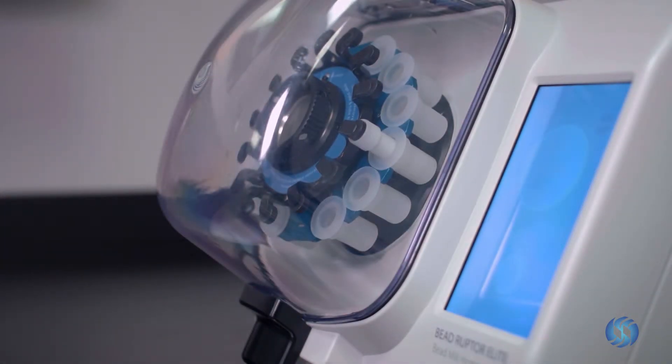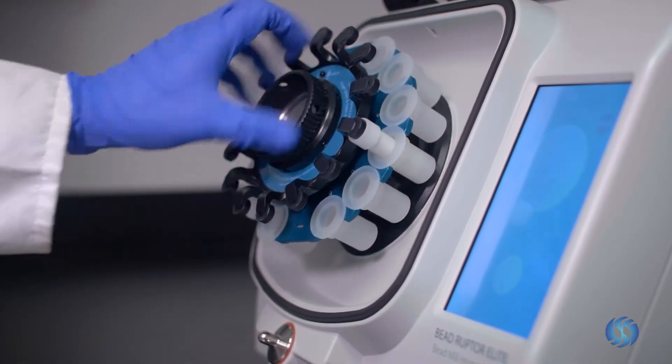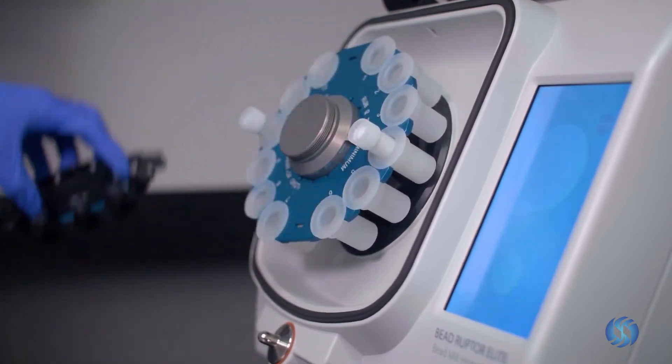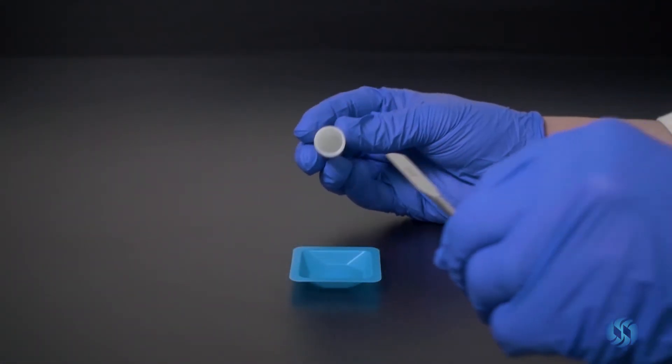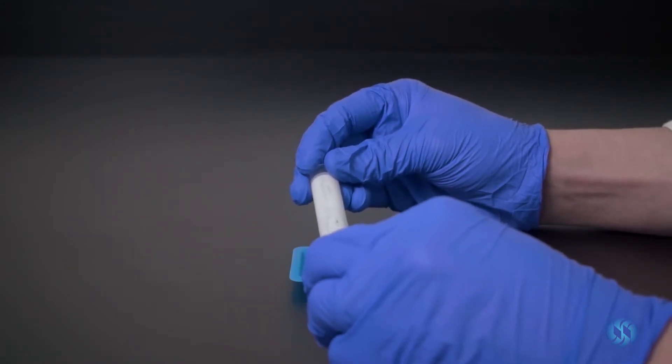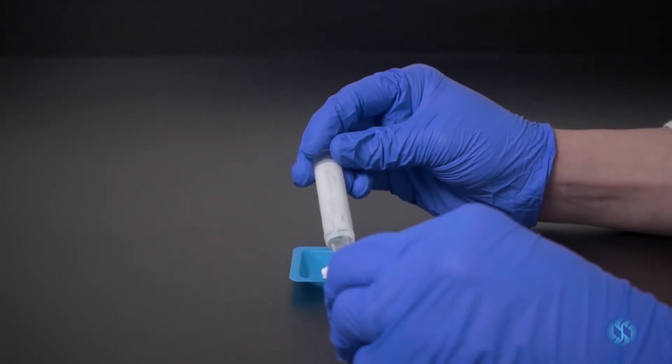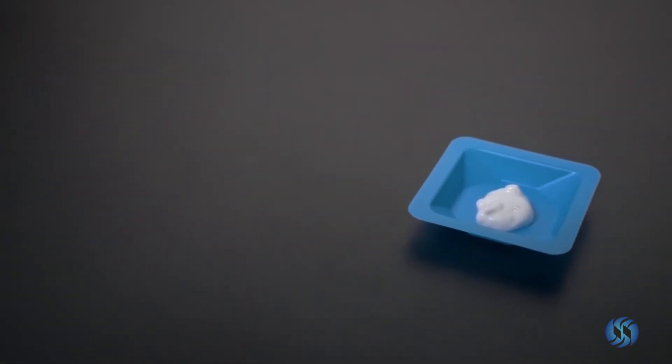When processing is complete, remove the 7-milliliter tube from the BeadRuptor Elite. Your emulsion is now ready for injection.